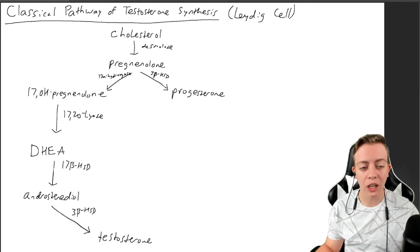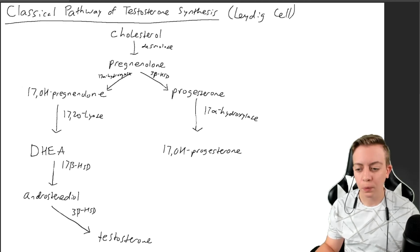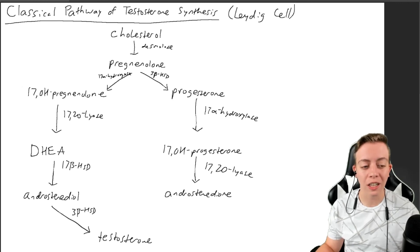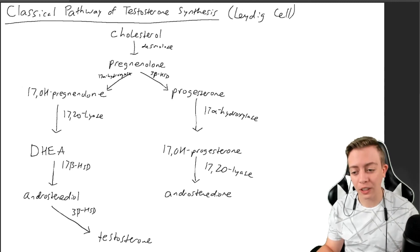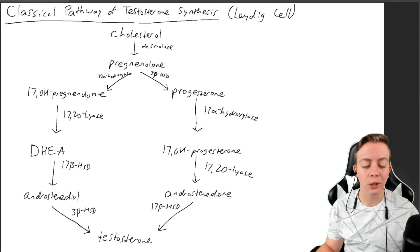And then we have progesterone over here. Progesterone is going to be converted by 17-alpha-hydroxylase to 17-hydroxyprogesterone, which will then be converted by 17-20-lyase to androstenedione, like we saw previously. And then androstenedione will be converted by 17-beta-HSD to testosterone.